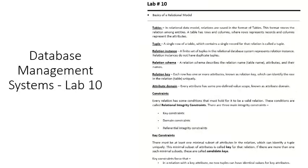We also have tuples. A tuple is a row inside a table — a set of attributes used to define a certain object or instance. For example, a student's name, his father's name, contact information, degree program, semester number, and CGPA — if you store all of this, it would constitute a tuple.